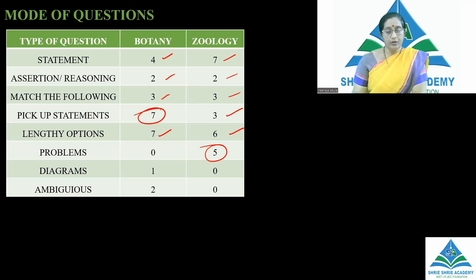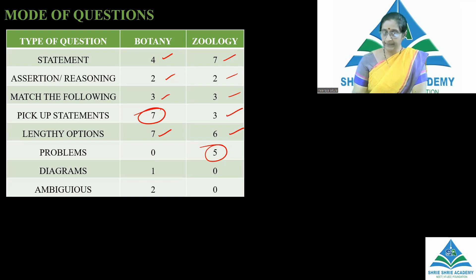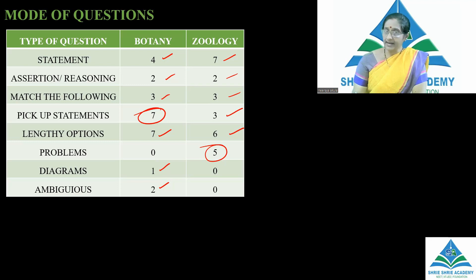Of those 5 problems, 2 questions related to the molecular basis of inheritance and principles of inheritance and variations are problems from the NCERT examples. One question was from the diagrammatic part. There were also 2 ambiguous questions — one related to the living world, where taxonomical hierarchy questioning was not in a correct manner, and another related to the anatomy of plants, where statements were given but the options were not related to those statements.